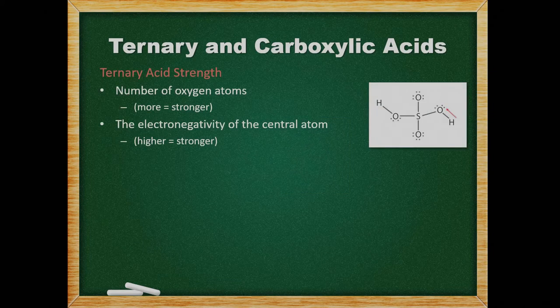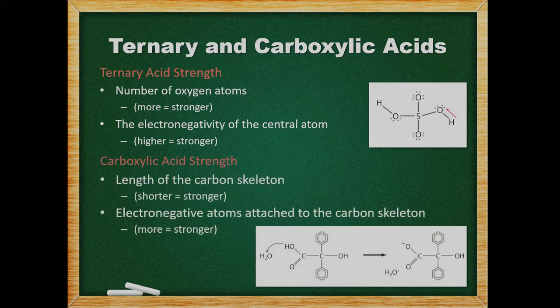The strength of ternary or oxoacids depends on two things: the number of oxygen atoms and the electronegativity of the central non-metal atom. When the OH bond is polarized, ternary acids ionize more easily. When the pair of electrons shared between the oxygen and hydrogen atoms is drawn away from the hydrogen towards the center of the molecule, the bond is polarized. The presence of more oxygen atoms and a central atom that is highly electronegative causes this to happen most readily. The strength of carboxylic acids also depends on the polarization of the OH bond. If the carbon skeleton is shorter and if there are electronegative atoms attached to the carbon skeleton, the bond is more polarizable.